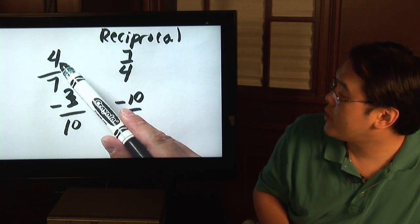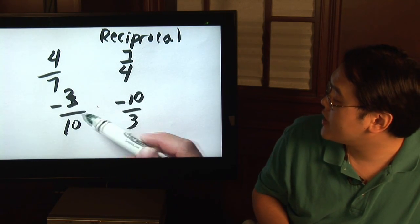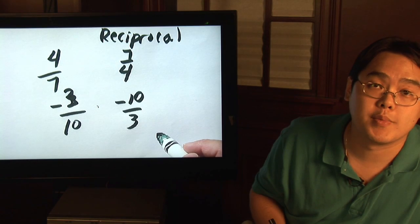For both of these cases, if you multiply four sevens and seven fourths, or negative three over ten times negative ten-thirds, you'll find out that's going to be one.